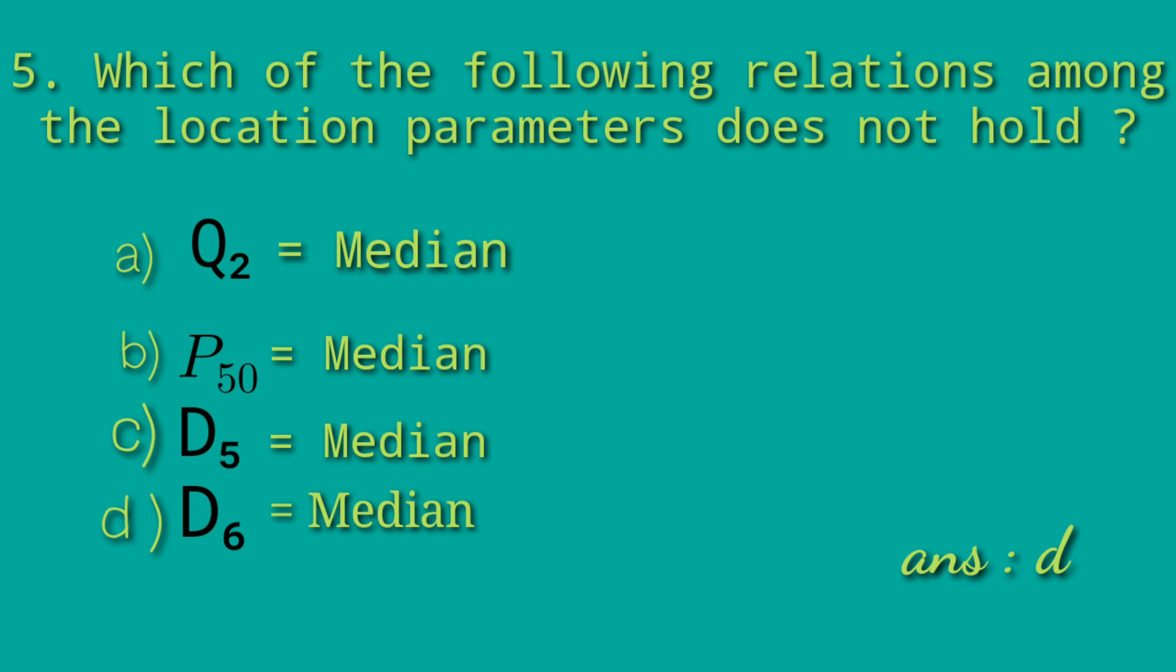Median is the middle value of the data in ascending order. Q2 equals median holds. P50 equals median, as percentiles have the middle value P50 as the median. D5 equals median.